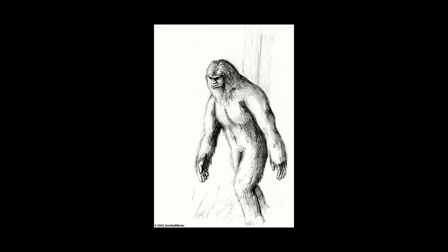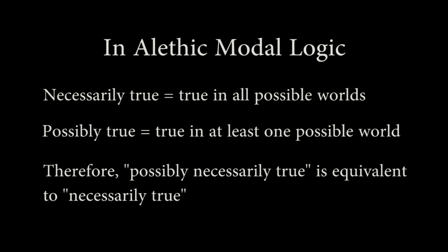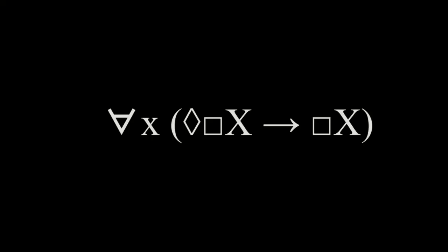Alethic modalities and epistemic modalities are often expressed in English using the same words. 'It is possible that Bigfoot exists' can mean either 'Bigfoot could exist, whether or not Bigfoot actually does exist,' or it could mean 'for all I know, Bigfoot exists,' which is epistemic. In alethic modal logic, something necessary is true in all possible worlds; something possible is true in at least one possible world. To say a statement X is possibly necessary is to say that in at least one possible world, X is true in all possible worlds — which is the same as saying X is true in all possible worlds. So saying 'possibly necessarily X' is equivalent to saying 'necessarily X.'